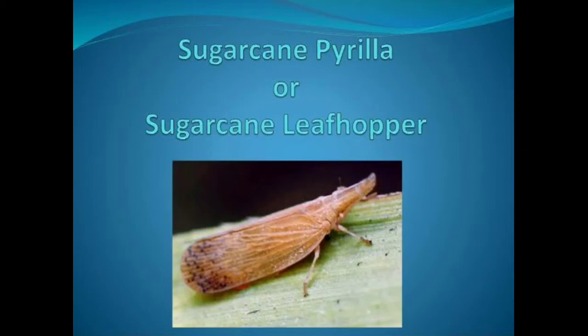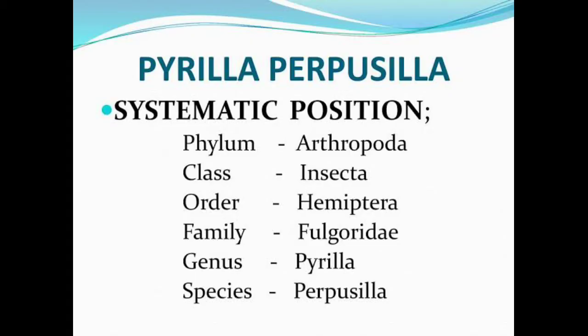Hello, today our topic of discussion is the sugarcane leafhopper or the Pyrilla perpusilla. First we go with the classification. If we talk about the systematic position, it belongs to the phylum Arthropoda, just because of the jointed leg, and the class is Insecta and order is Hemiptera. The family is Fulgoridae and the genus is Pyrilla and the species is perpusilla.